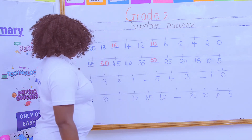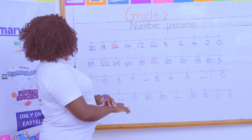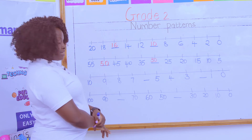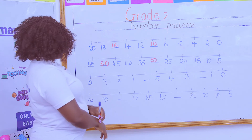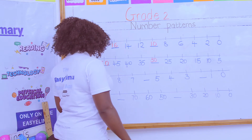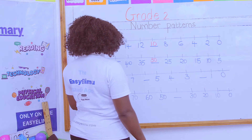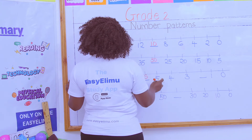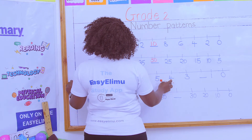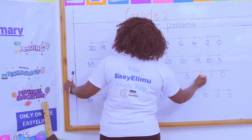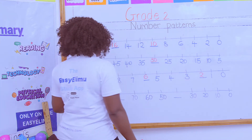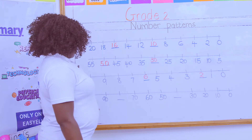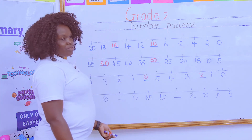The next one is just counting in ones. So we say: 10, 9, 8, 7, 6, 5, 4, 3, 2, and 1.